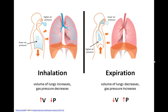For a forced expiration, like you would experience with a cough, the internal intercostal muscles contract and pull the ribs down and inward. Your abdominal muscles also contract, pushing upward on the diaphragm, causing the volume of the lungs to decrease even more and gas pressure to increase even more, causing a forced expiration. Remember Boyle's Law: if the volume of the container holding the gas increases, the gas pressure decreases and you inhale. If the volume decreases, the pressure increases and you exhale.